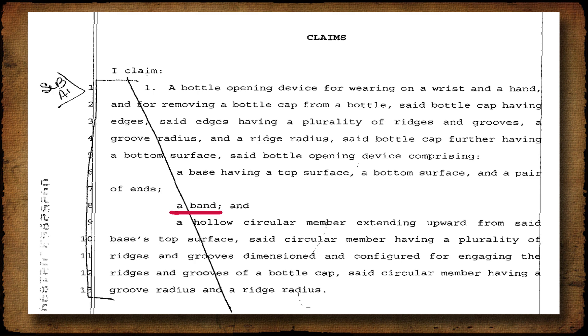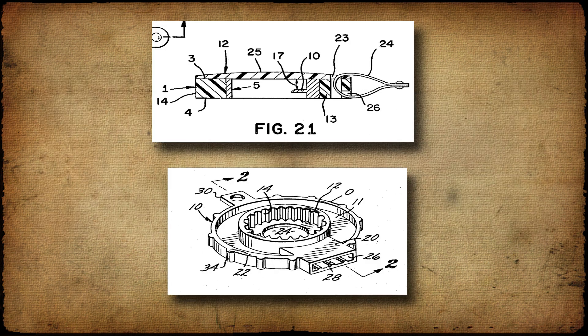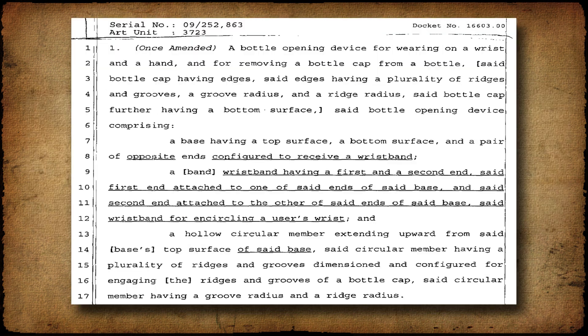The examiner did a search for prior art and found a number of references believed to be relevant. The examiner then compared the applicant's claim to that prior art and rejected the claims. The examiner's opinion was that the applicant's original claim was obvious based on two prior patents. Here is where the applicant amended the original claim based on the patent examiner's rejection. The applicant's changes to the originally filed claim are underlined and/or put in parentheses as required by the patent office rules.